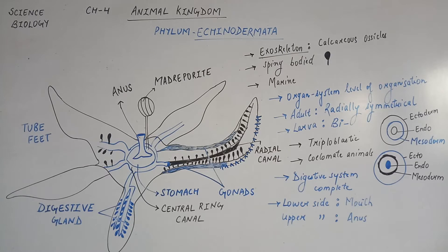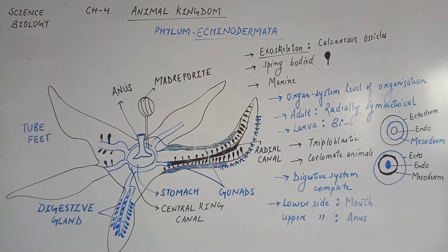Phylum Echinodermata में Sea Urchins, Sea Lily और Starfish जैसे Organisms आते हैं. इन Organisms की Body Calcareous Ossicle से बनी होती है, मतलब इनका Exoskeleton Calcareous होता है, Calcium Carbonate से बनता है. इनकी Body में पूरे Spines present होते हैं, इसलिए इसको Spiny Bodied Organism बोलते हैं. इसका नाम भी इसलिए Echinodermata रखा गया है. जैसे कि आप Diagram में देख सकते हो, ये Spines Tube Feet में present होते हैं.